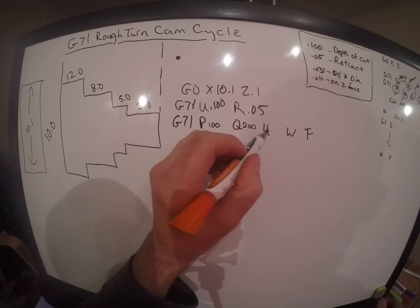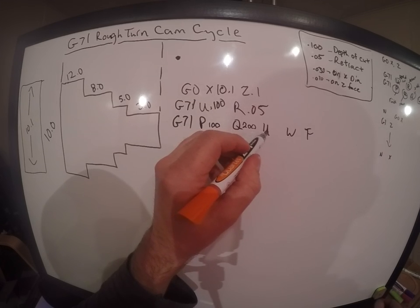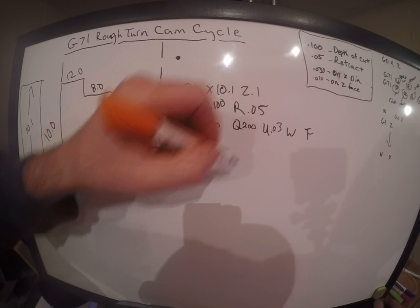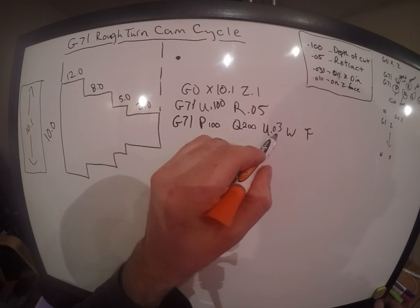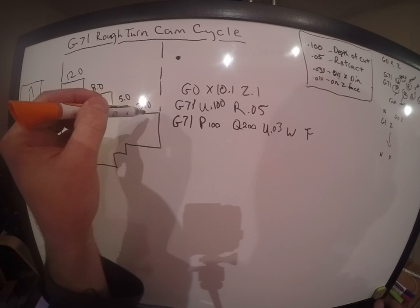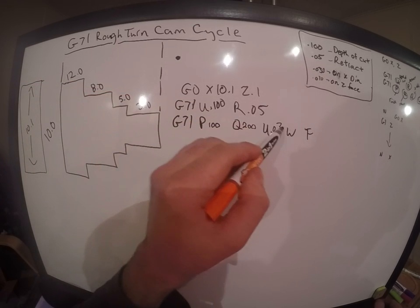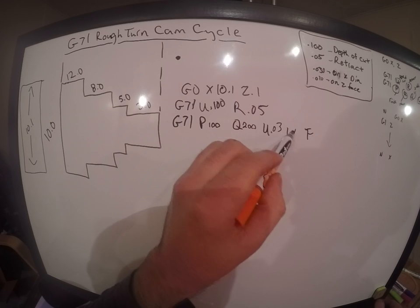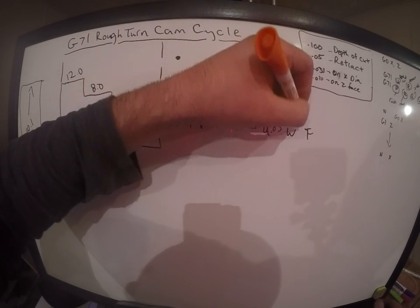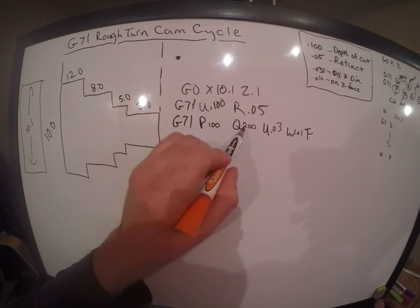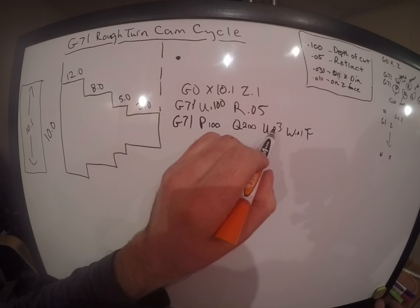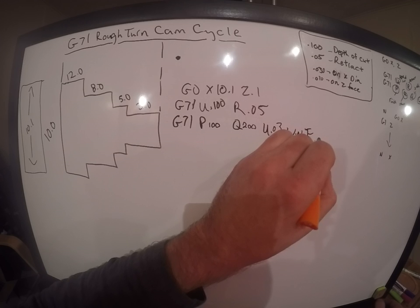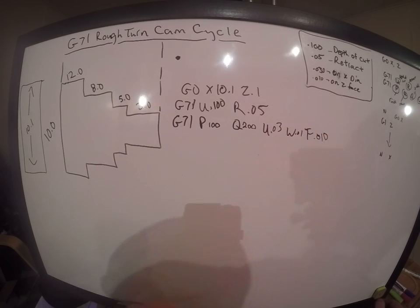The U is going to be our stock allowance on the X diameter, how much we're going to allow for the finish. So if we throw in 30 thousandths, that's going to leave us 30 thousandths to re-profile this with a finish turn tool to bring it down to the exact diameter. And for our Z face stock allowance, we'll say 10 thousandths. So our U is our X diameter allowance, our W is our Z face allowance, and our F value is going to be our feed rate. We'll just say 10 thousandths.